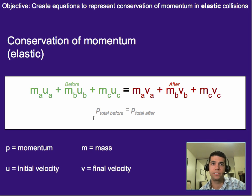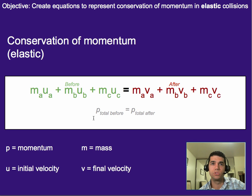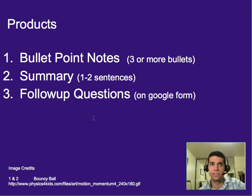Don't focus on memorizing this big long thing, but what I would do is just memorize this idea of adding up all the momentum before and all the momentum after, and then all you have to do is plug in the masses and u's and v's to figure out what those are. That's it for this one. Three or more bullet points worth of notes, your one to two sentence summary, and your follow-up questions on Google Forms.